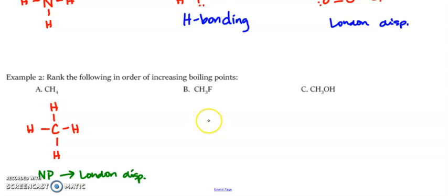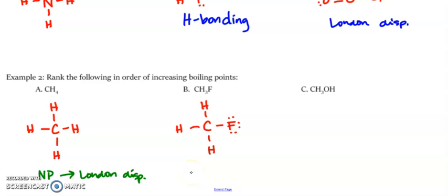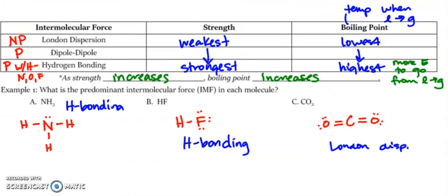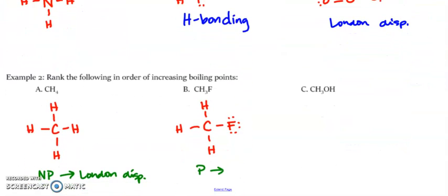For CH3F: carbon with three H's, replacing one hydrogen from CH4 with a fluorine. In this case, even though they're all equally spaced, they're not all the same, so this is polar. Polar means either dipole-dipole or hydrogen bonding if H is bonded to N, O, or F. Here I have hydrogen and fluorine present, but they are not bonded to each other, so this is not hydrogen bonding — this is dipole-dipole.